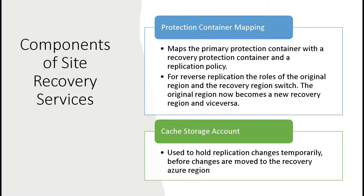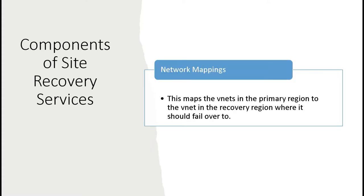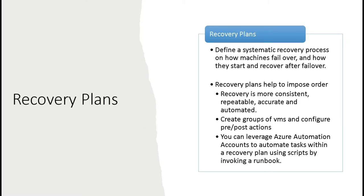Another component that gets created is a protection container mapping, which maps the primary protection container with a recovery protection container and a replication policy. Also, a cache storage account — if you don't have one or don't specify one, Azure will create one for you, and this holds the replication changes temporarily before the changes are moved to the recovery Azure region. There are also network mappings, which map the VNets in the primary region to the VNet in the recovery region where it should fail over to.